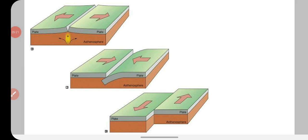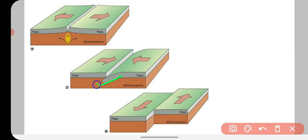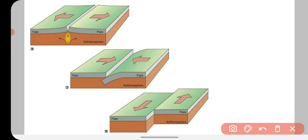Kyunki hamara crust ek single piece mein nahi hai, balki kai saare plates ke form mein hai, jinko hum tectonic plates kehte hain. Aur ye tectonic plates asthenosphere ke upar float kar rahi hain. Jab ye plates float karte hue aapas mein interact karti hain, ye teen tarike se interact kar sakti hain: dono plates ek dusre se door ja sakti hain, dono plates ek dusre ke paas aa sakti hain jahan ek plate niche aur ek upar jati hai, ya dono plates side by side move kar sakti hain. Is tarike se tectonic plates ke beech mein interaction hota hai, aur jab ye interact karti hain, toh aapas mein lock ho jati hain.